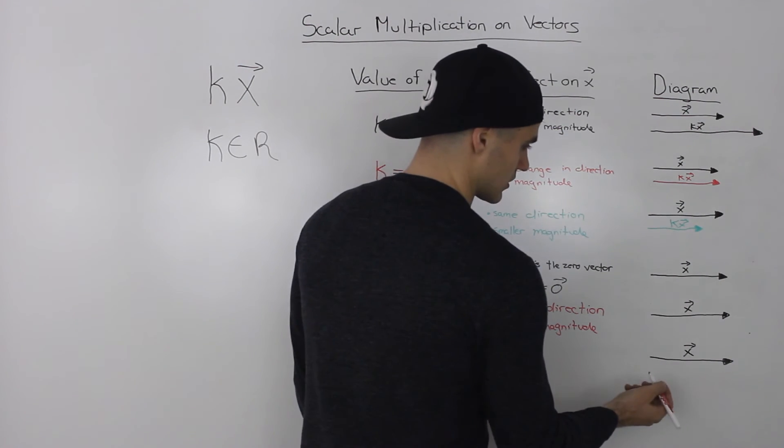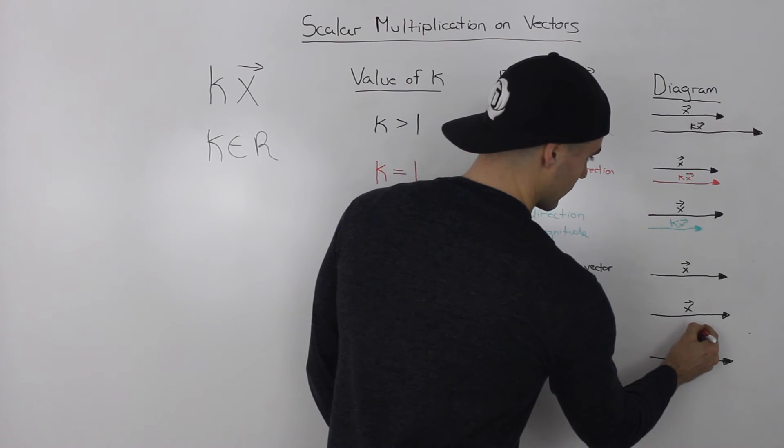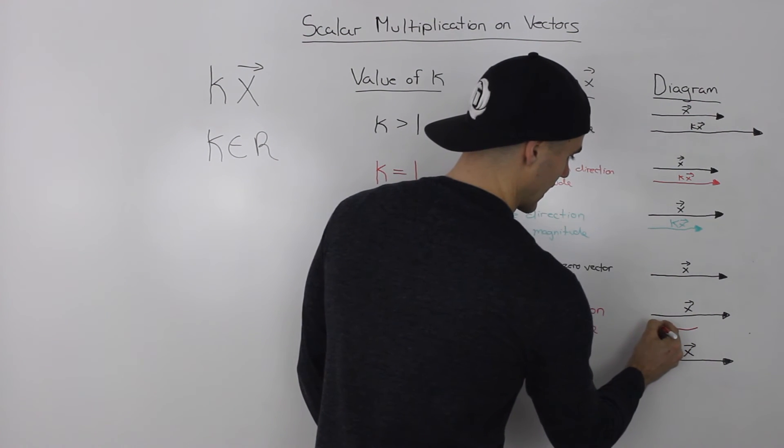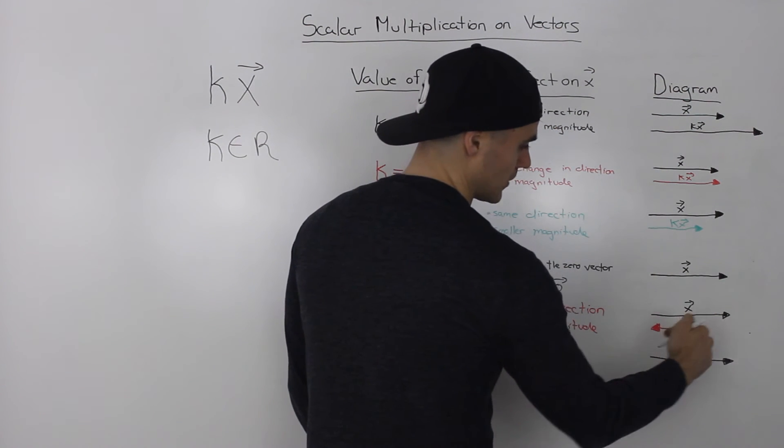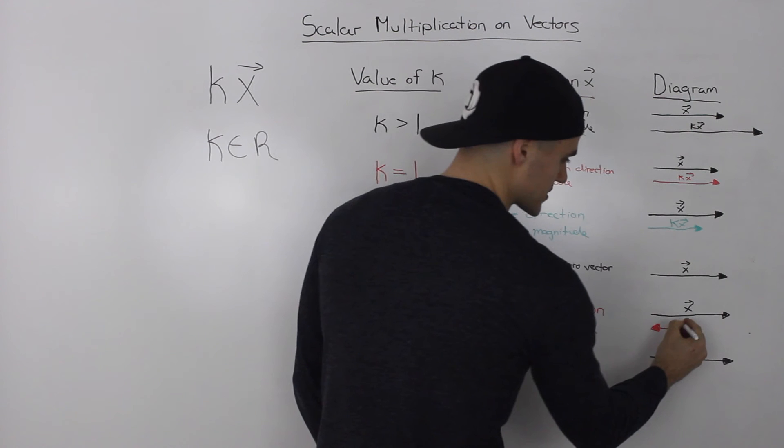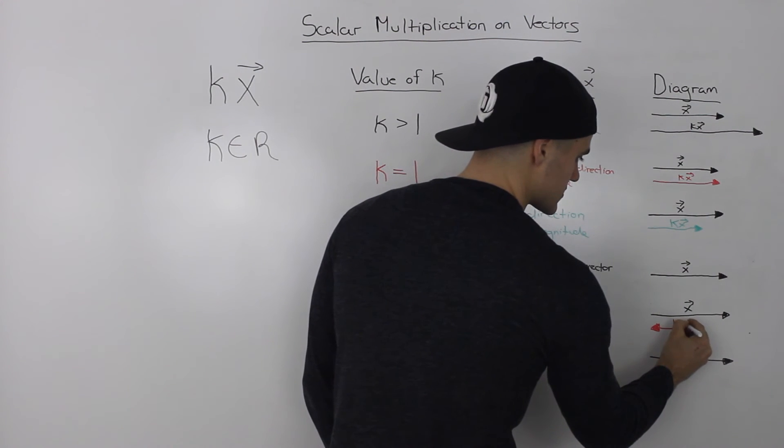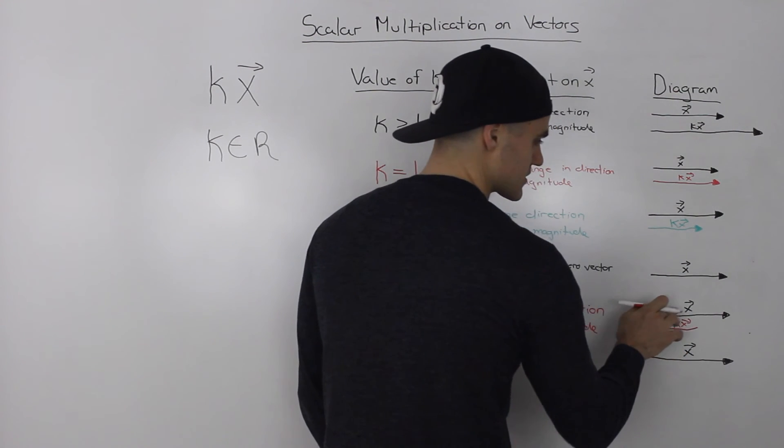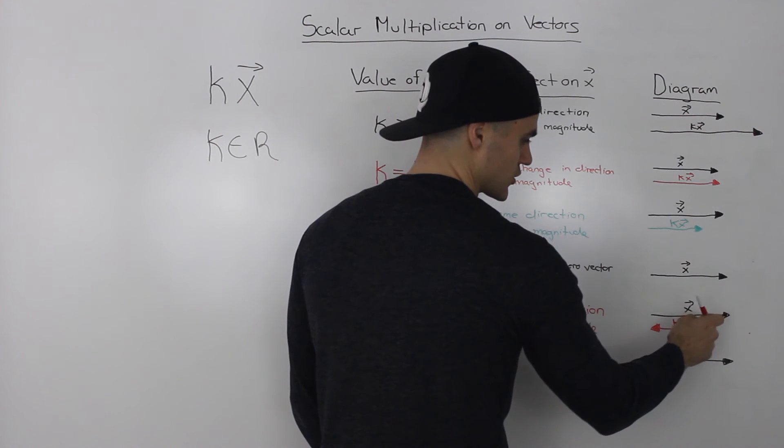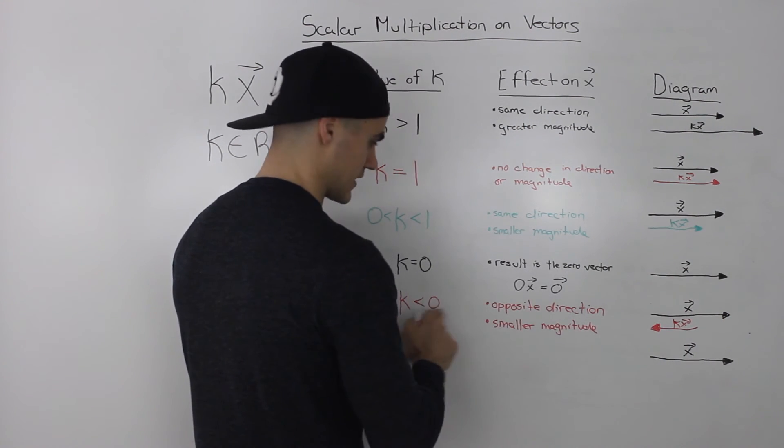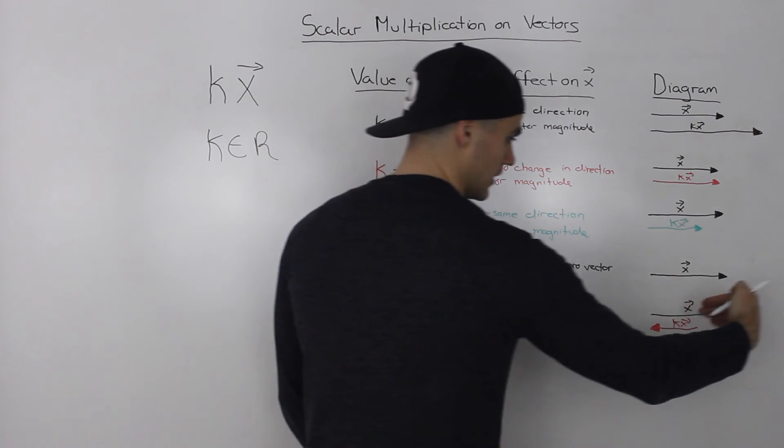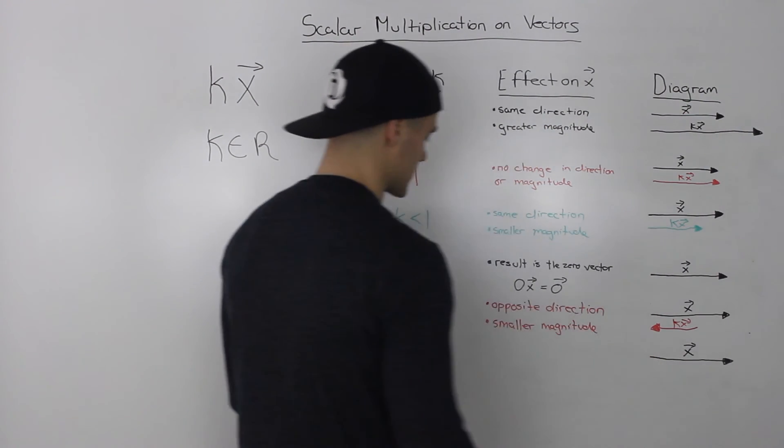So how will this look like in a diagram? Well, you'll have a vector that has a shorter length or a smaller magnitude than the original one, and it will be going in the opposite direction. So this original vector x was going in this direction. This new vector kx, if the k is between zero and negative one, it will be going in the opposite direction.